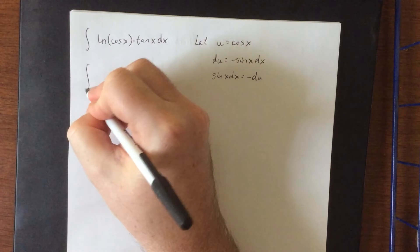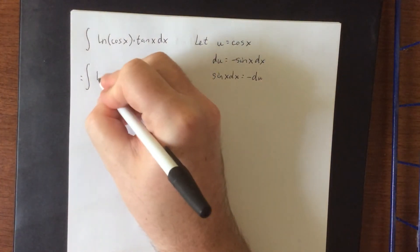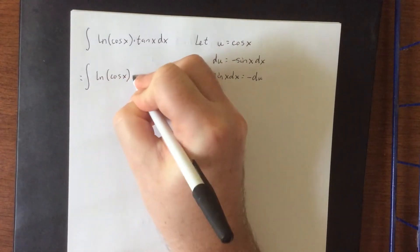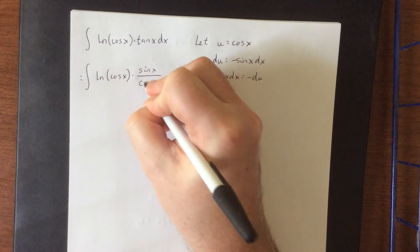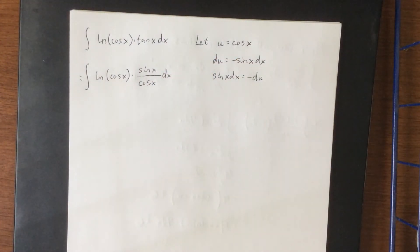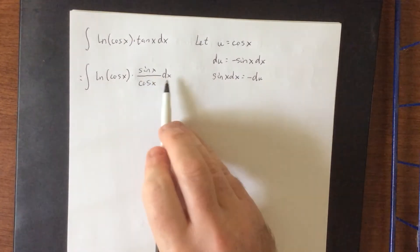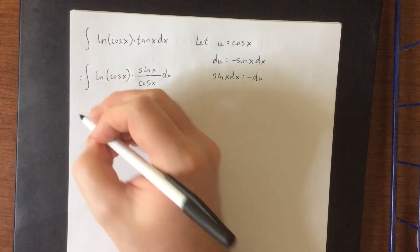Now in order for us to get to that point, we need to actually make use of some trigonometric identities in our integral. This would be the natural log of the cosine of x. Then using a quotient identity, this would be the sine of x over the cosine of x times dx. That way we can link together the sine of x with the dx to become negative du, and make substitutions on our cosines.